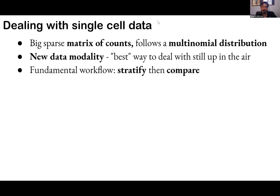How do you deal with this big sparse count matrix? It's a different mathematical object than bulk data. The sampling process giving rise to counts means you need different statistics. Because of the scale and new techniques — particularly machine learning — the best way to deal with it is still evolving. Early on, people copied bulk data methods, but now there are machine learning methods tailored to this kind of data giving really good results, and that's what we're planning to use for the WormBase tools.